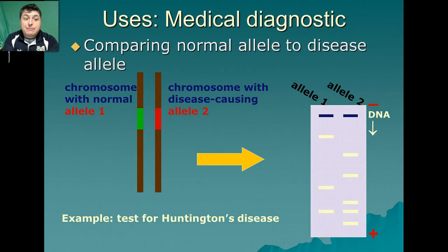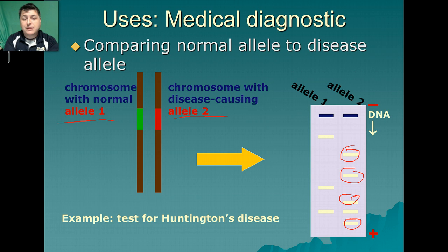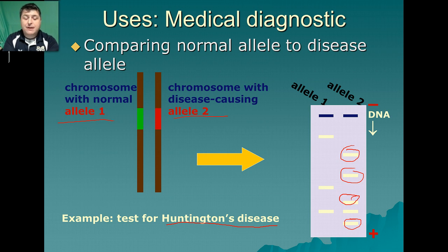We can use DNA fingerprinting in medical diagnosis by comparing a normal allele with a diseased allele to determine the differences a mutation has produced. When analyzing individuals who may have something like Huntington's disease, we can compare their allele to known differences and diagnose them with that disease even if they're asymptomatic — even if they're not showing any of the symptoms yet.